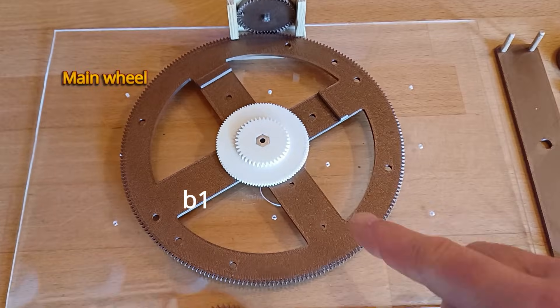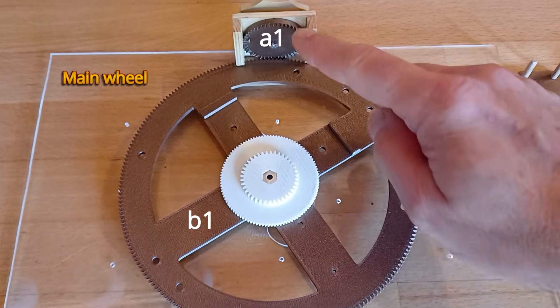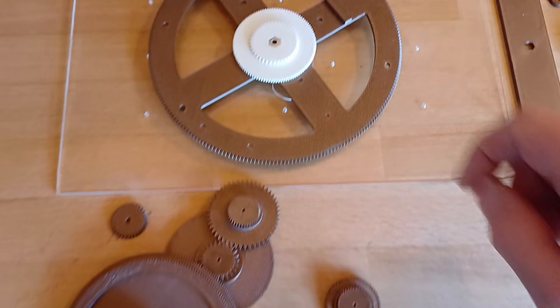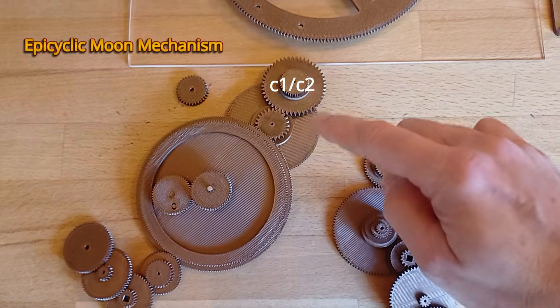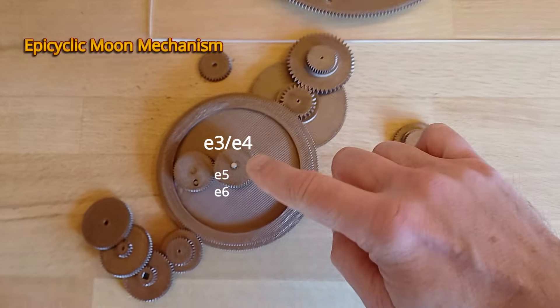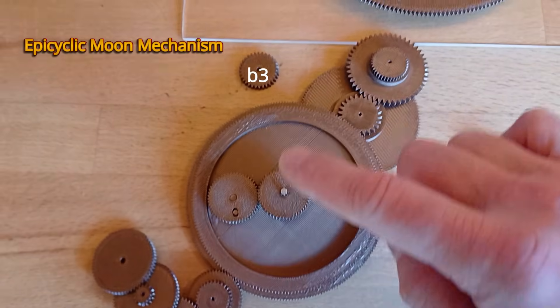First the main wheel B1 and the input ground wheel A1. Then the moon mechanism with wheels C, D and E, wheels K as well as B3 for the moon hand.